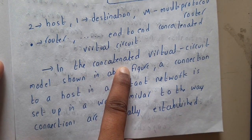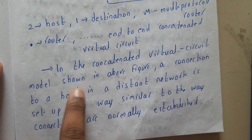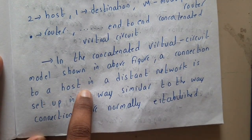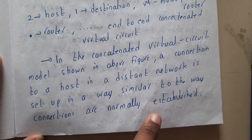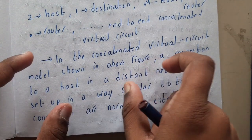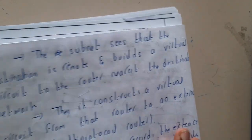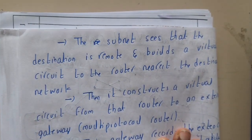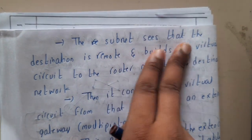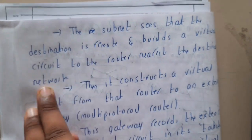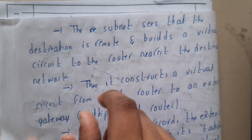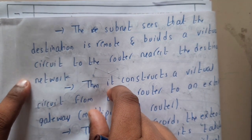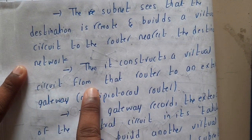In the concatenated virtual circuit model shown in the figure, a connection to a host in a distant network is set up similarly to how connection-oriented circuits are normally established. You establish a connection directly from source to destination first, and only then send data. The subnet checks that the destination is remote and builds a virtual circuit to the nearest router, step by step, until it gets close to the destination.